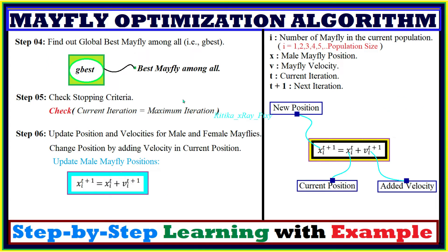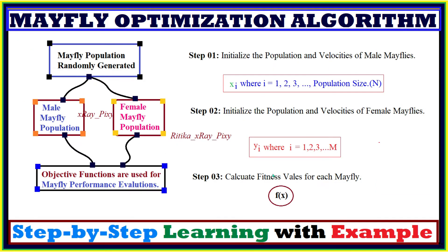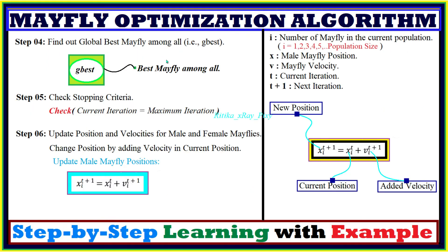In step 4, we select the best Mayfly among all — this is the global best Mayfly. When we calculate the fitness value for each Mayfly, we consider the minimum value among all as the global best. After that, we check the stopping criteria: if matched, we display the best solution obtained; if not, we repeat the loop. In step 6, we update the position and velocity for both male and female Mayflies. The new position is obtained by adding the velocity to the current position.